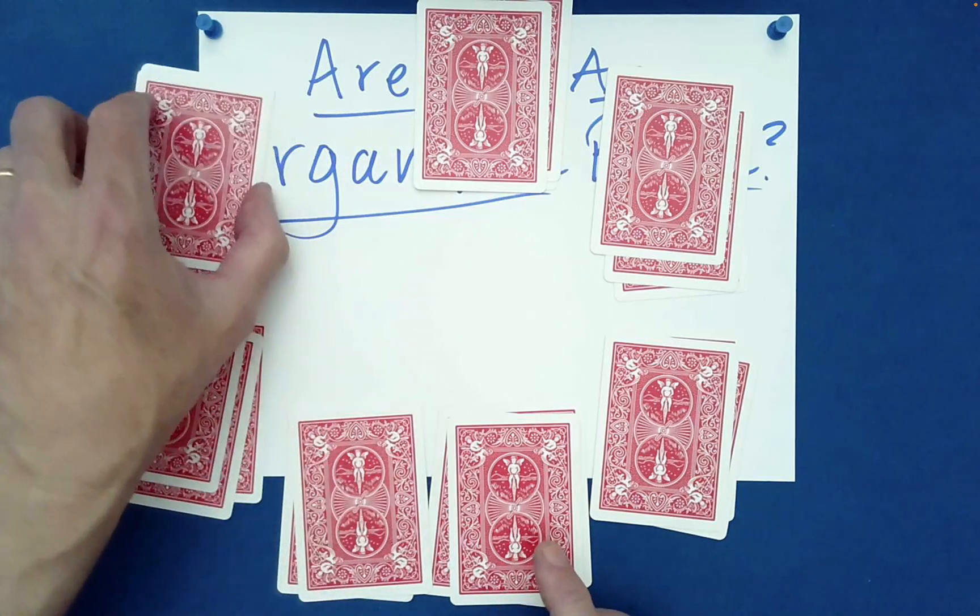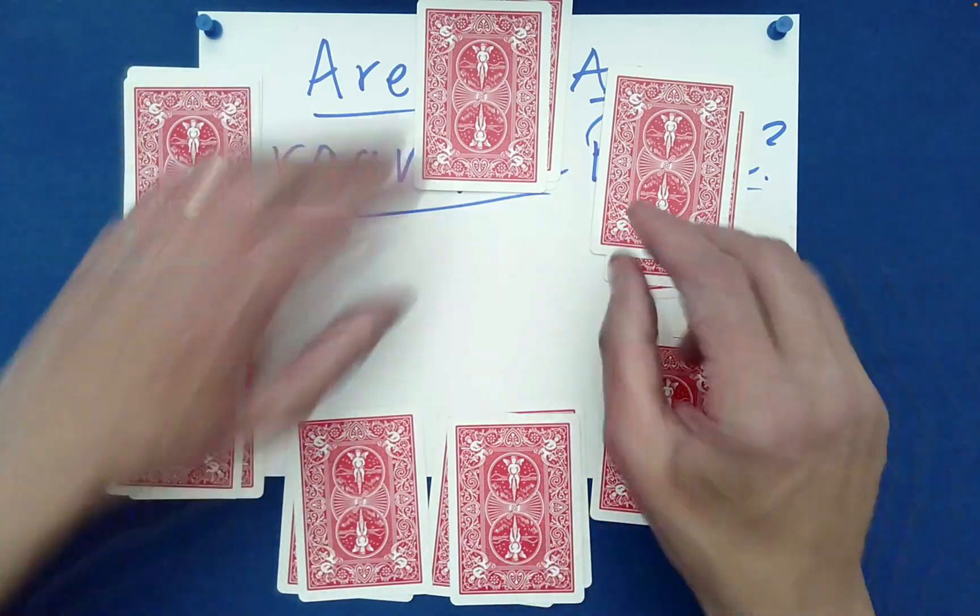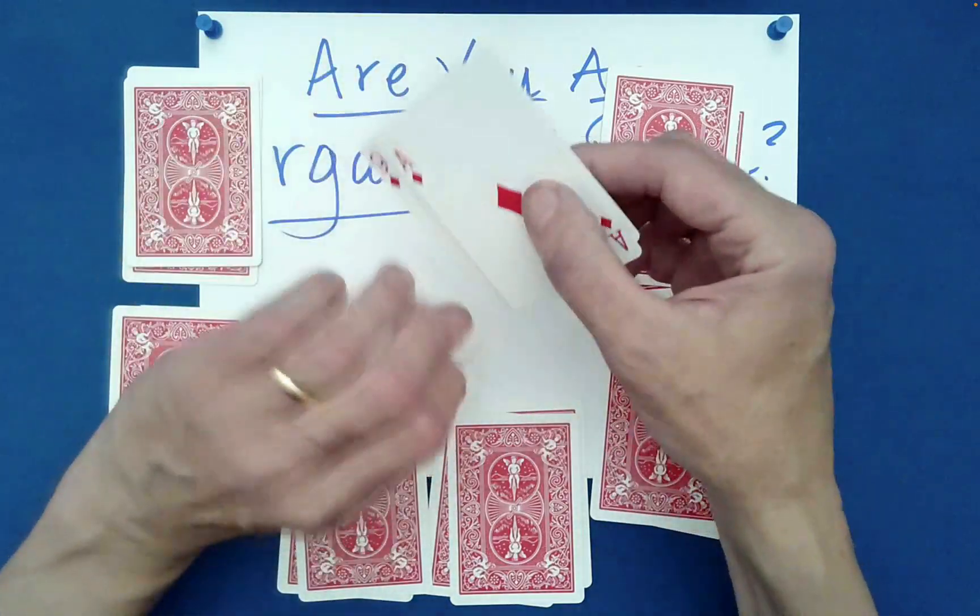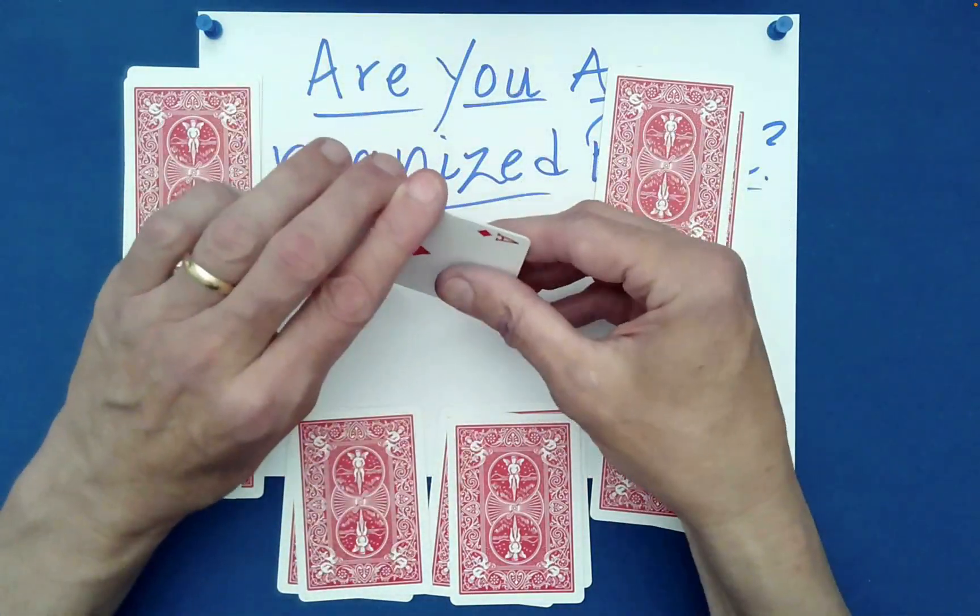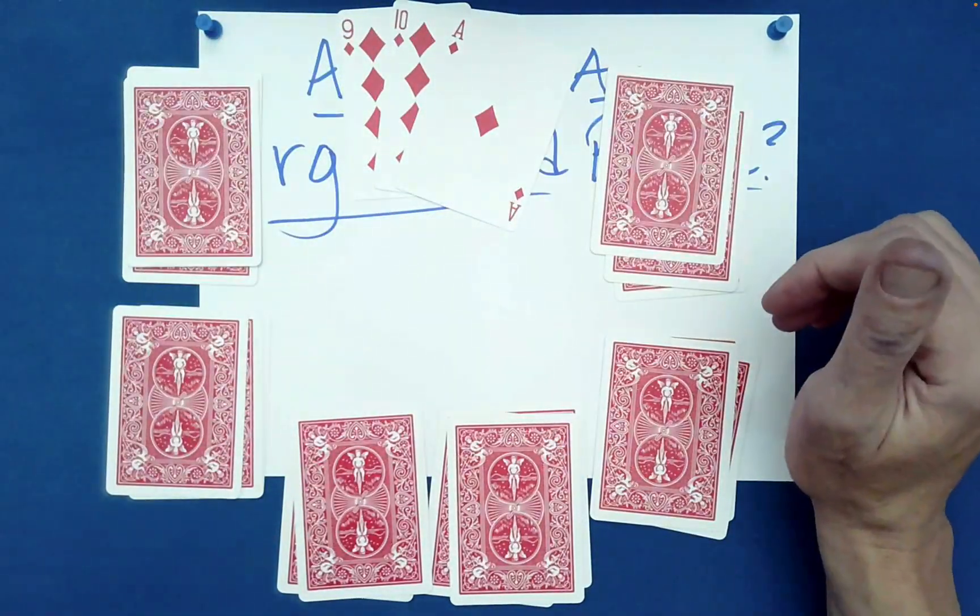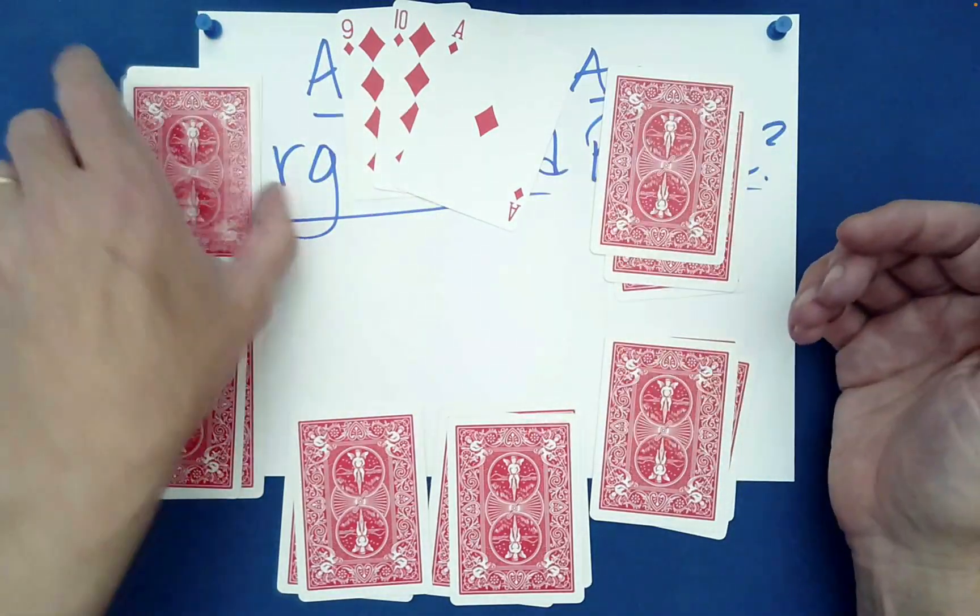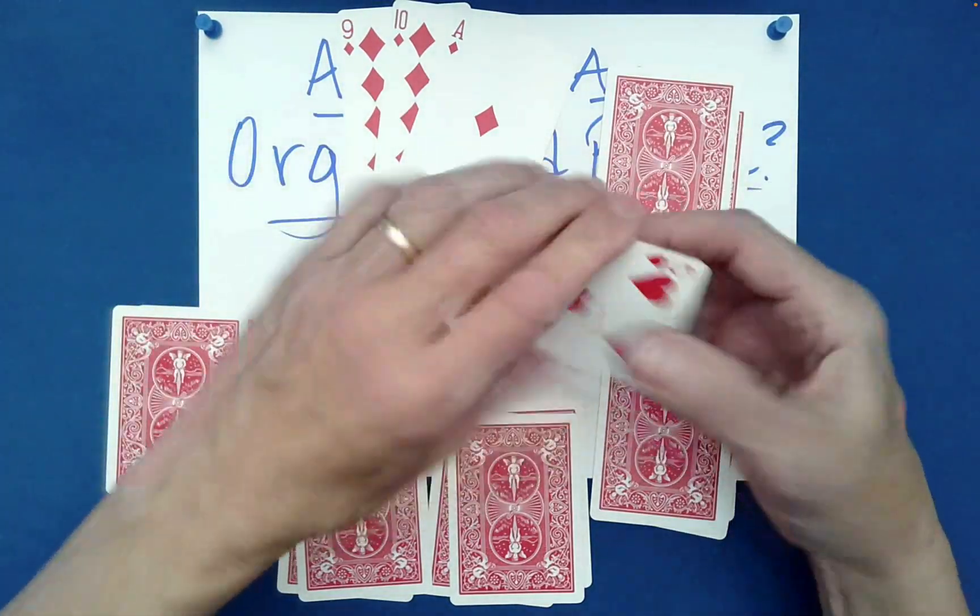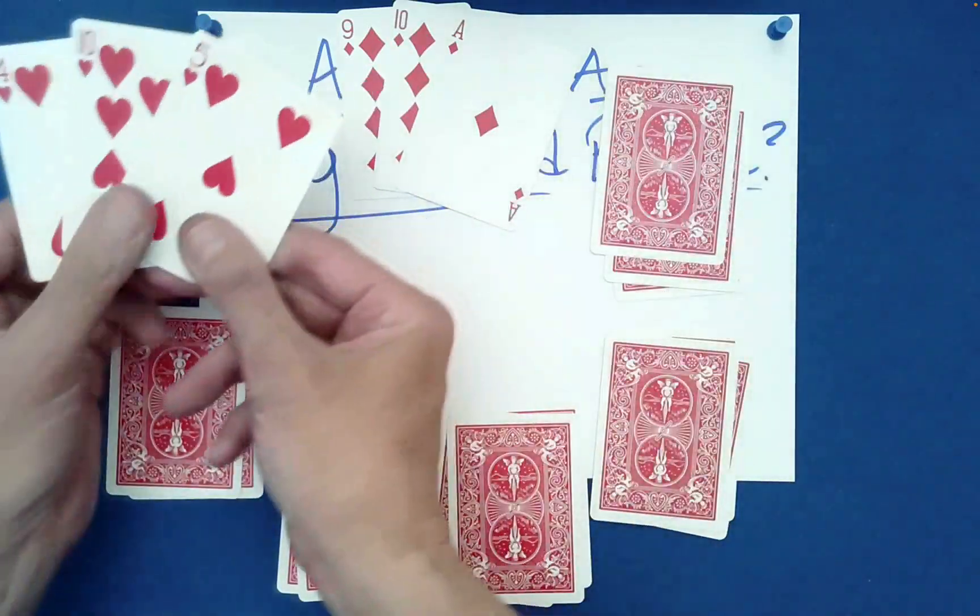So which one should we look at first? Top one? Seems reasonable. So how would we know if you are an organized person? Well, I guess they're all red. I don't know. Oh, these are all red too. That's kind of interesting.